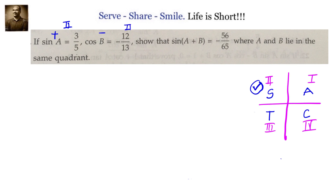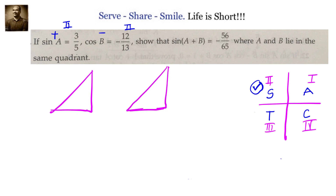Let's draw the triangles for A and B. For A, sin(A) = 3/5, so we have sides 3 and 5. By Pythagoras' theorem, the remaining side is 4. Similarly, cos(B) = -12/13, and by Pythagoras' theorem, the missing side is 5.